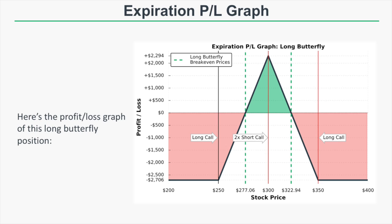If the stock price is right at $300, the two short 300 calls expire worthless, the 350 long call expires worthless, and the long 250 call is worth $50. The net value of the butterfly at expiration is $50. Since we paid $27.06, our profit is $22.94, or $2,294 maximum profit. Our break-even prices are $277.06 on the downside and $322.94 on the upside.